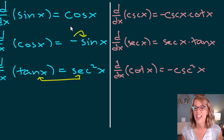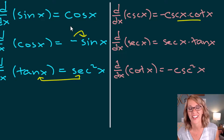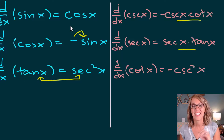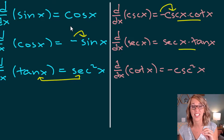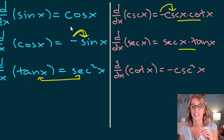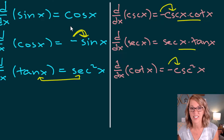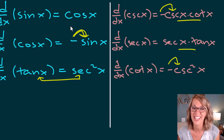These match up similarly to the Pythagorean identities: cosecant and cotangent go together, and secant and tangent go together. You'll also notice the negative sign only shows up with the cosecant functions — similar to how the negative sign showed up with sine. There are a few little tricks to memorizing these, but really you just need to have them memorized.